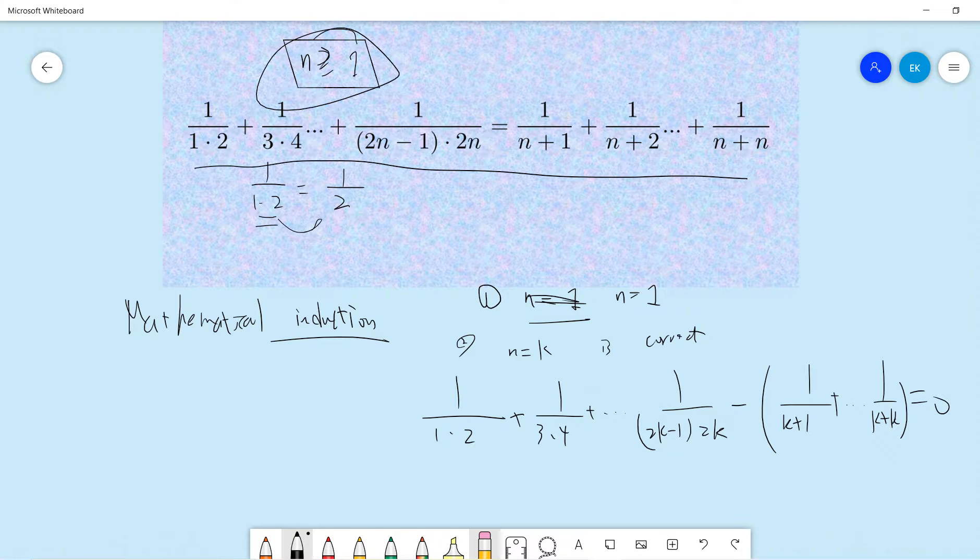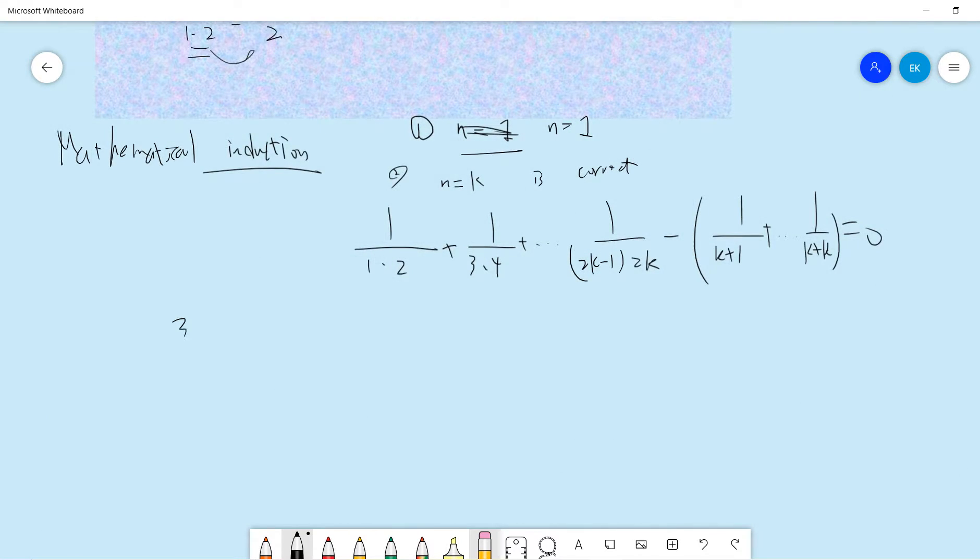We just check that n equals to k plus 1. So n equals to k plus 1, the left hand side is the same, this part is the same plus another term 1 over 2k. And so you need to change k to k plus 1, right?